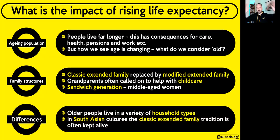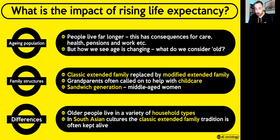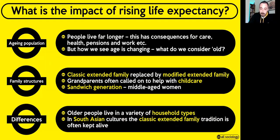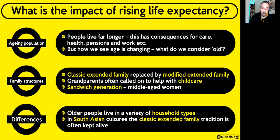What's interesting about the ageing population is that in Britain we deal with it very differently from other cultures. When people get older, they might continue to live with their partner, live alone, move in with family in an extended family arrangement, or live in a care home. But in other cultures — particularly South Asian culture, so India, Bangladesh, Pakistan — those families tend to invite their older relatives to live with them in a classic extended family. This tradition isn't dead by any means. It tends to be kept alive by smaller communities and cultures, in this case South Asian families.